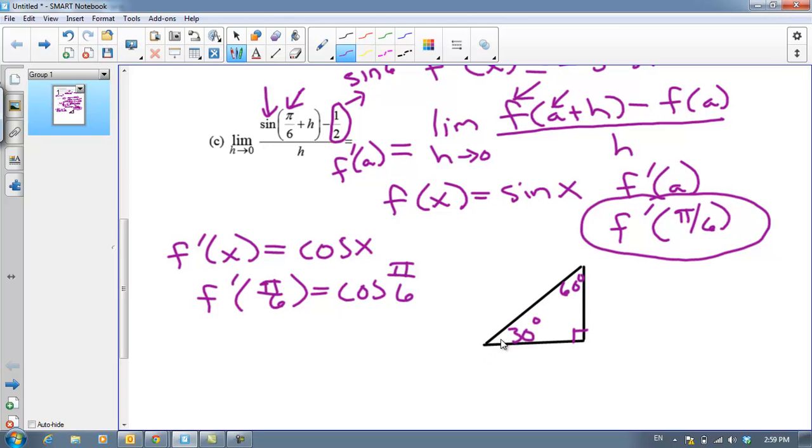And you should know that the side across from the 30 degree angle we're going to label as a one. And the hypotenuse is a two. And the side across from the 60 degree angle gets a square root of three. You should just know that. There's some things we just need to know. The only other one is the 45, 45, 90, which of course is one one square root of two. But for the 30, 60, 90, the one goes across from the 30, a square root of three across from the 60, and a two on the hypotenuse.